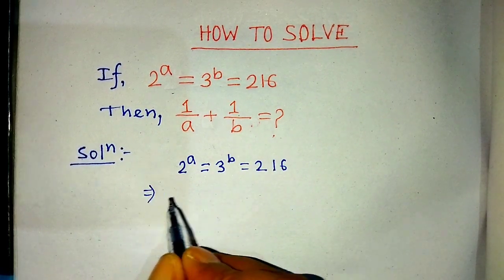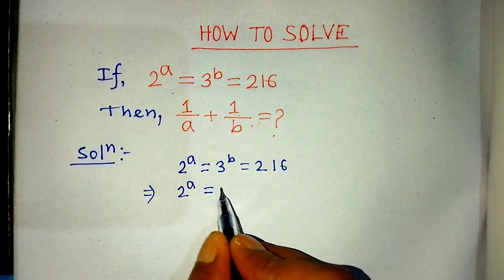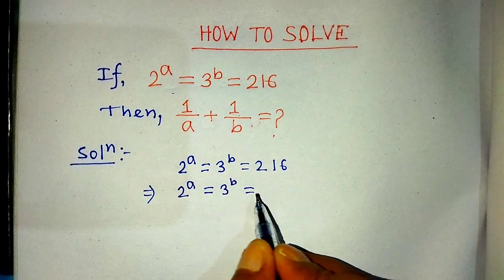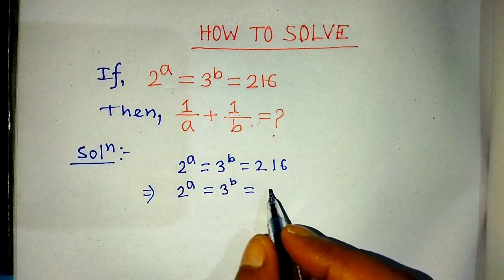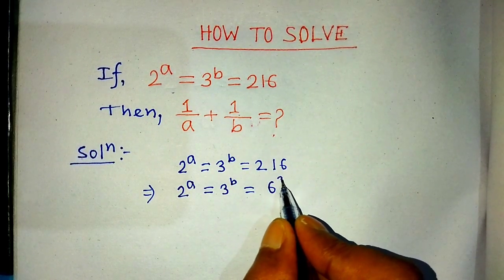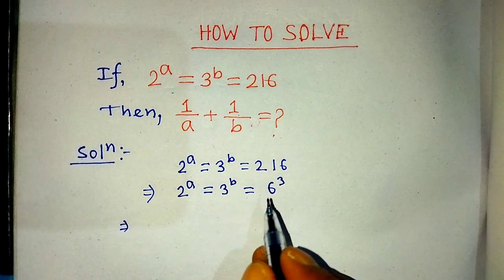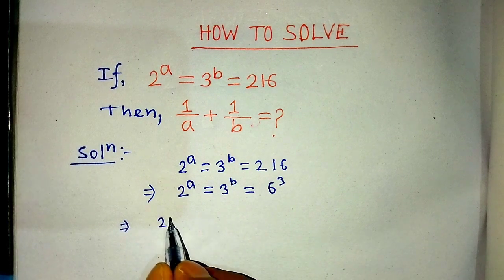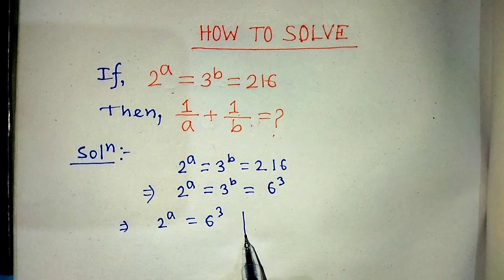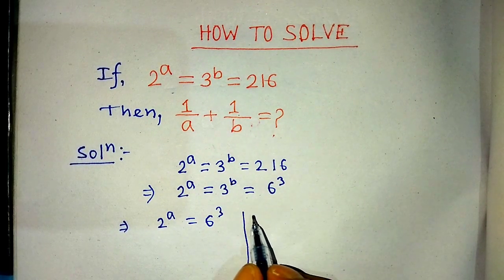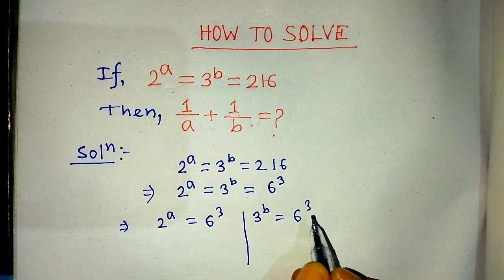We can write from this equation: 2 to the power A is equal to 3 to the power B is equal to 6 to the power 3, since 216 equals 6 cubed. From this, we get two separate equations: 2 to the power A is equal to 6 to the power 3, and 3 to the power B is equal to 6 to the power 3.